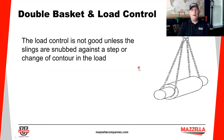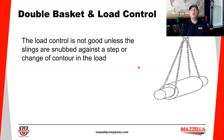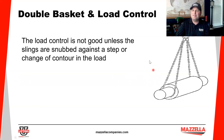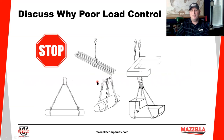A double basket hitch's load control is not good unless the slings are snubbed against a corner. My professional recommendation — unless you're making the same pick on the same product repeatedly and it creates efficiency — is not to use this type of chain sling, because it's not very versatile; it's set up for just one item. In general construction and manufacturing, I definitely recommend not buying this type of sling. You must have it snubbed against corners, because if the load is moving and you stop the crane, you could lose the load.